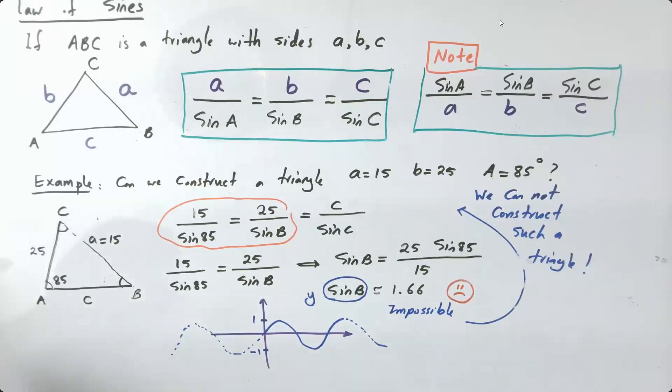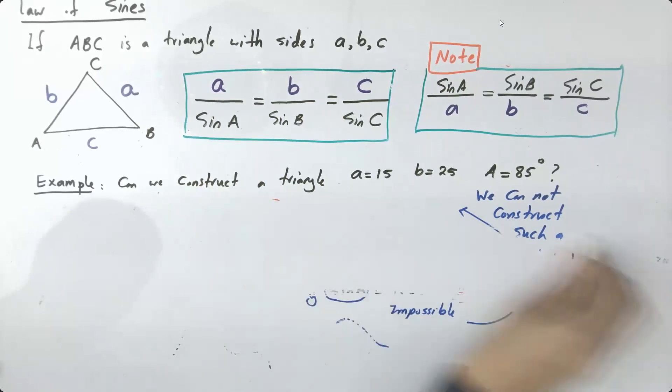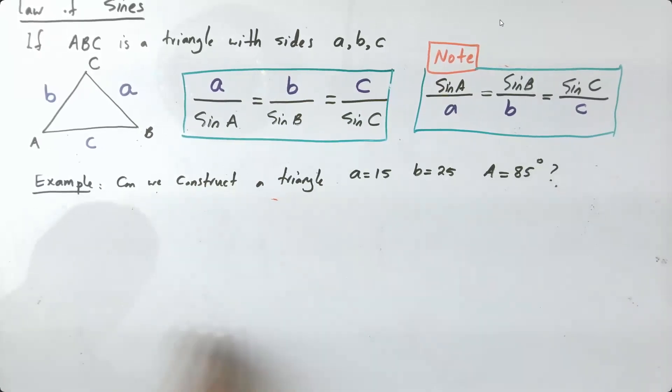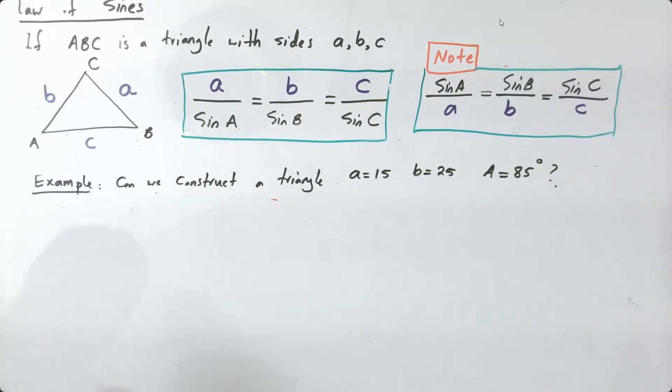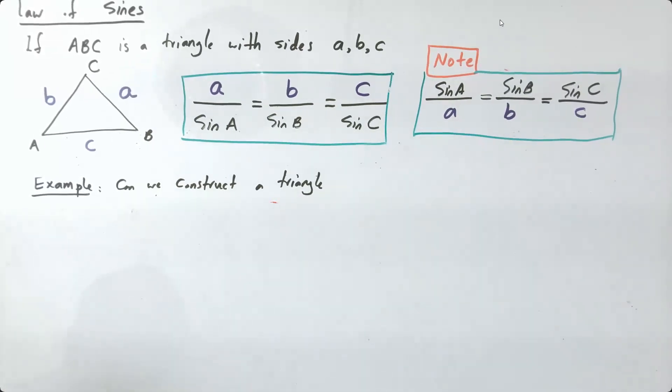Let's take a look at another example. So far we saw that we have an example that we cannot construct a triangle. Now I'm going to give you this information. I'm going to tell you, hey, can we construct a triangle with the following information?